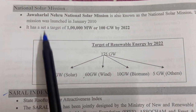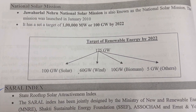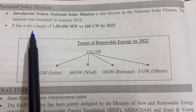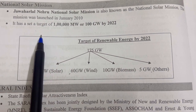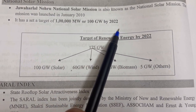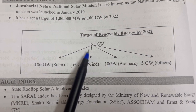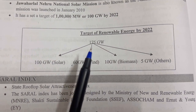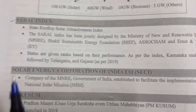The Jawaharlal Nehru National Solar Mission was launched in January 2010. It has a target of one lakh megawatt (100 gigawatt) by 2022. The target for renewable energy by 2022 is 175 gigawatt: 100 gigawatt from solar, 60 from wind, 10 from biomass, and 5 gigawatt from other sources.